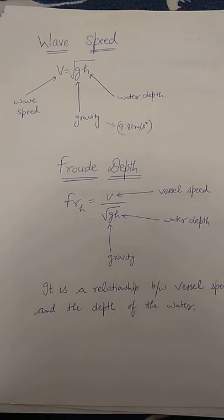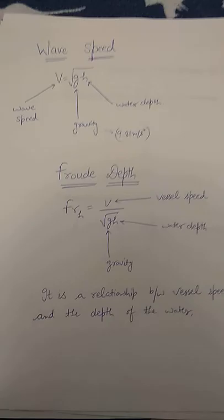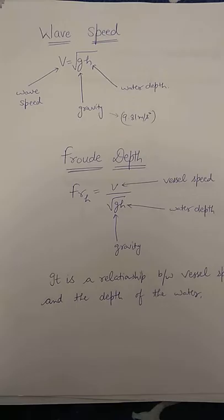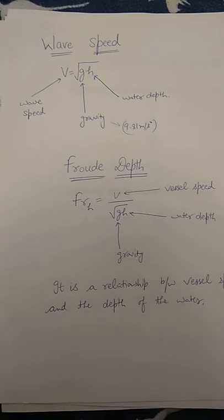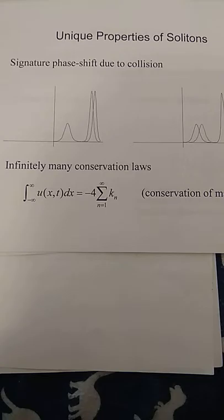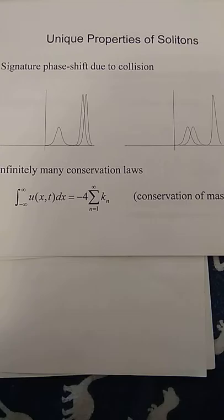As a vessel approaches a critical Froude depth equals 1, it produces a wave of translation due to the maximum wave speed. If this energy is contained, such as in a channel, it will continuously disperse ahead of the vessel in the form of soliton waves. The vessel also undergoes a dynamic solitary response. The unique properties of solitons include the signature phase shift due to collision, as shown in figure.